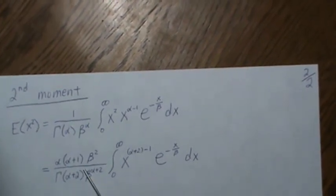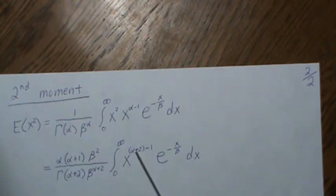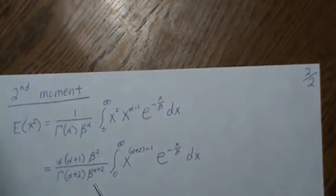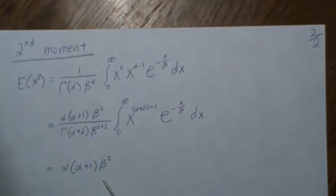We do that because then this bottom half is a PDF and it integrates to 1, leaving alpha times alpha plus 1 times beta squared.